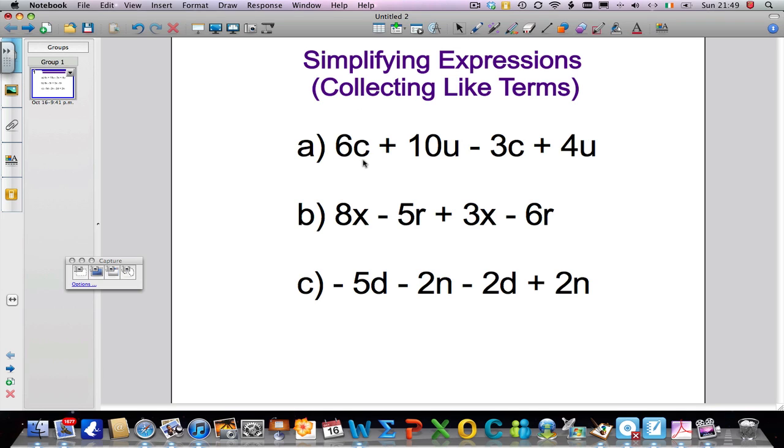So here's the first problem: we've got 6c + 10u - 3c + 4u and basically what I have to do is simplify this whole expression down because I can actually write this a slightly easier way than what it looks like at the moment.